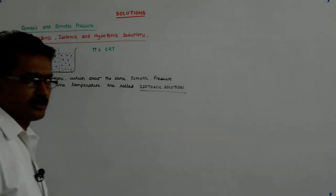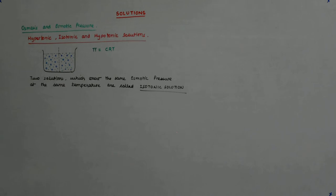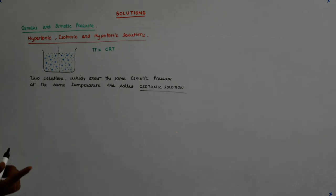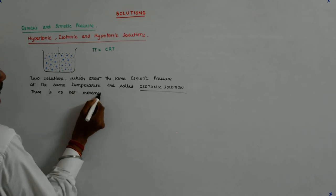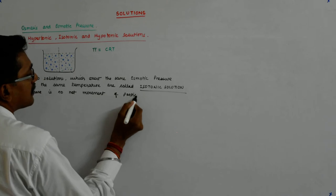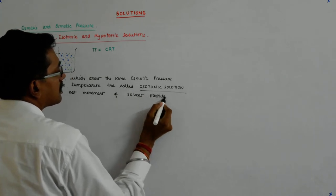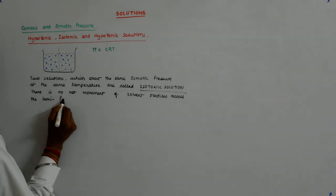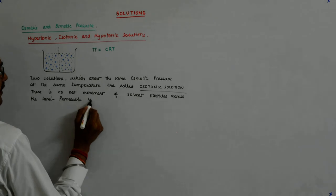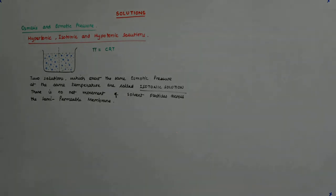With an isotonic solution, if a solution is kept with its isotonic solution, there will be no net movement of the solvent particles to either side — no net movement of solvent particles across the semi-permeable membrane.